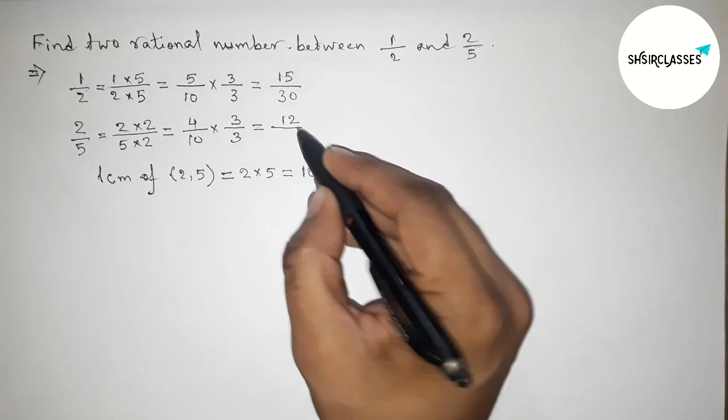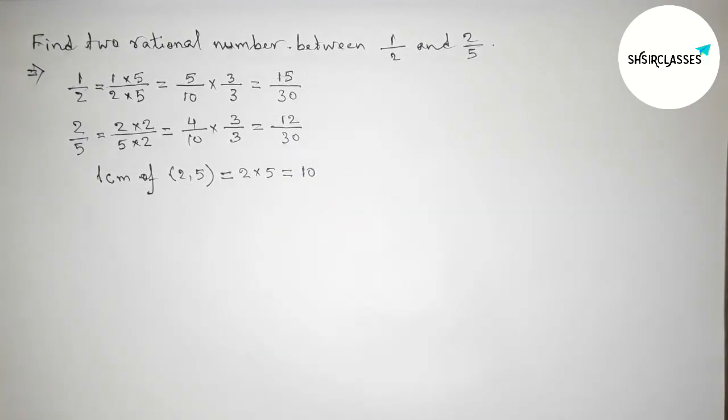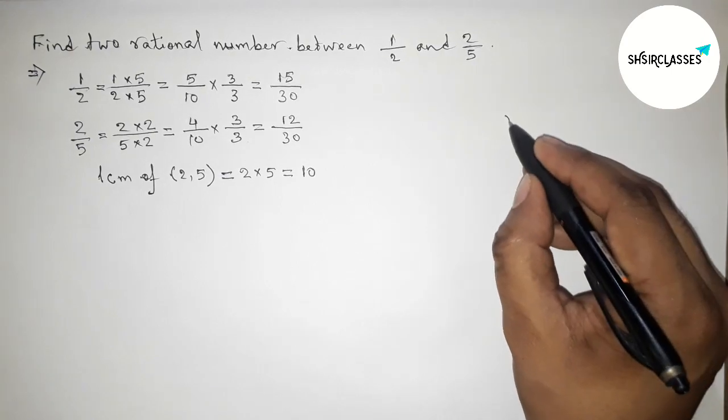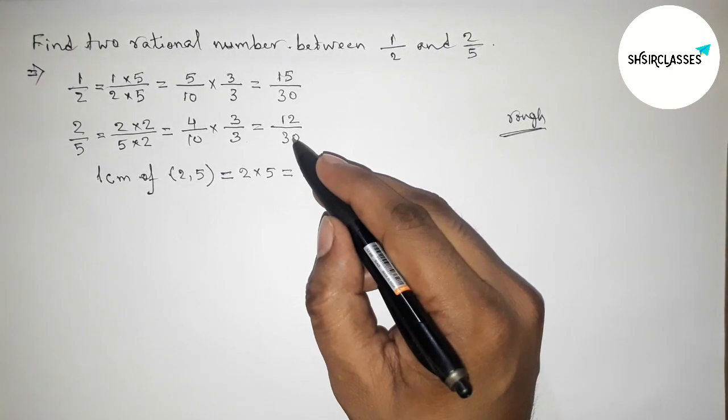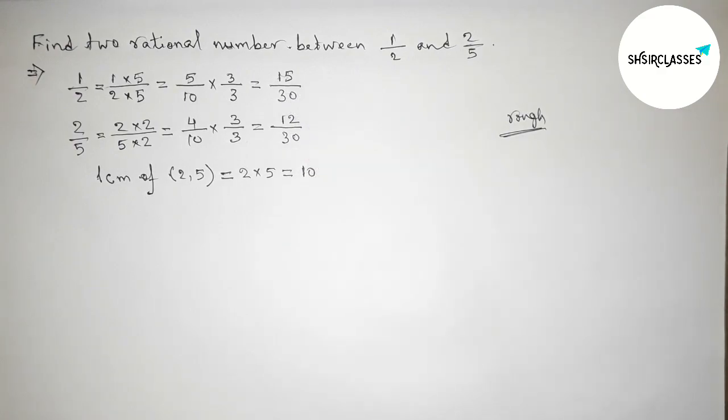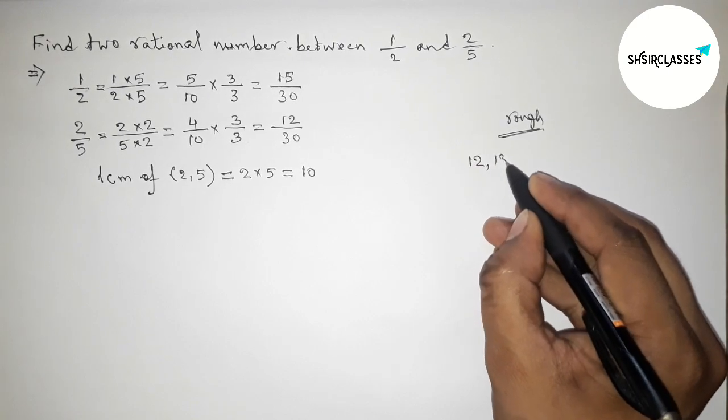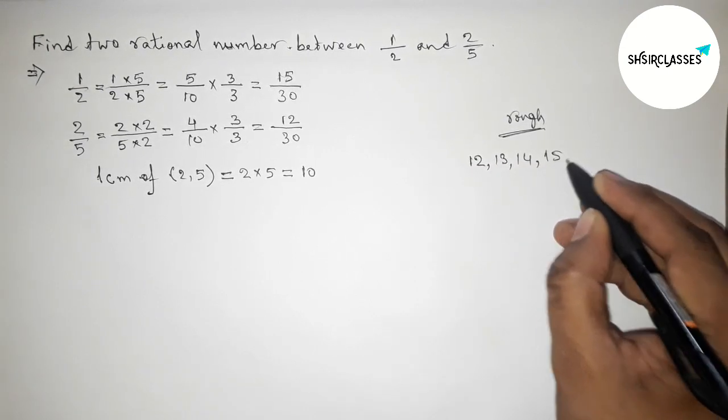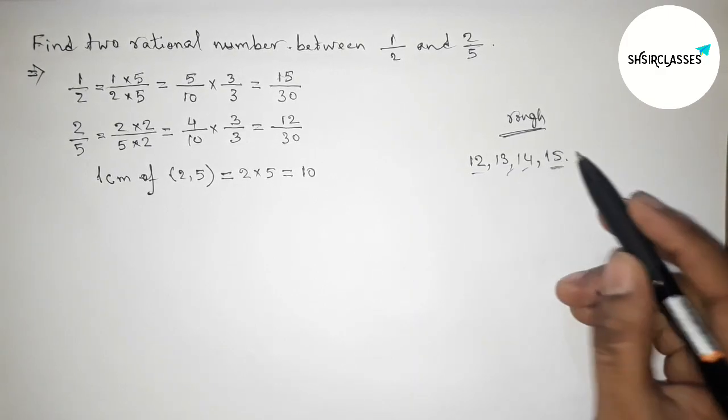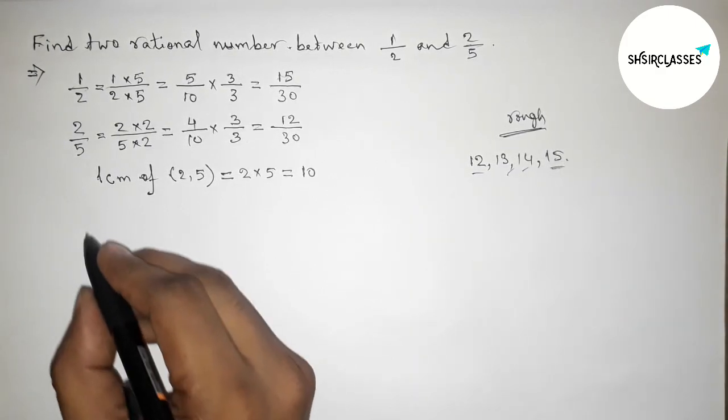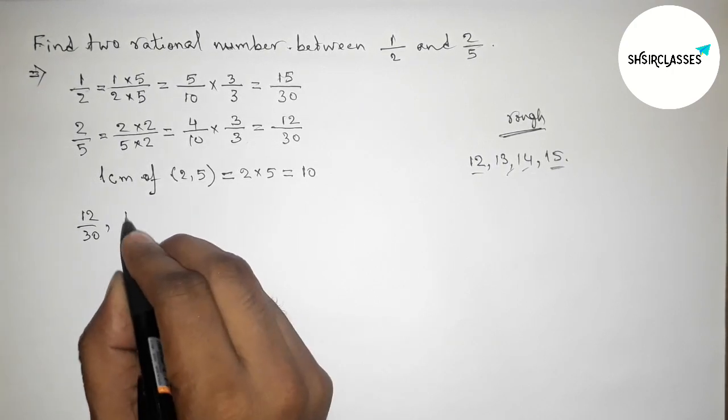Now roughly discussing here some important calculations. Here both the denominators are equal and 30, so now between 12 to 15 we can get here 2 integers. So between 12 to 15, taking here 2 integers.